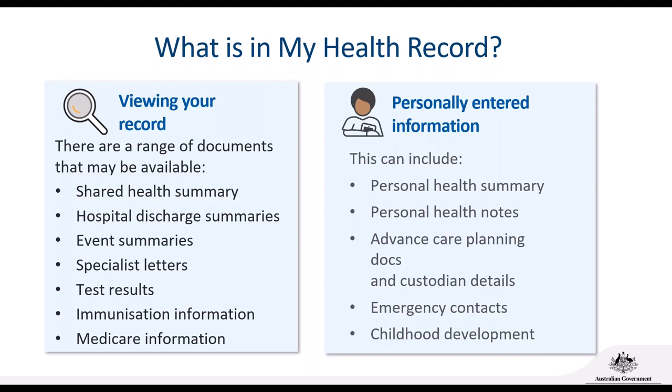You can choose what information flows into your record from these sources — just look in your record's Privacy and Settings tab to see what you have set up, and change the settings if needed. You can also add information to your My Health Record, or if you are a carer or nominated/authorised representative, you can add information to the record of the person you care for. Examples include advanced care planning information, personal health summary, emergency contacts, and childhood development information.